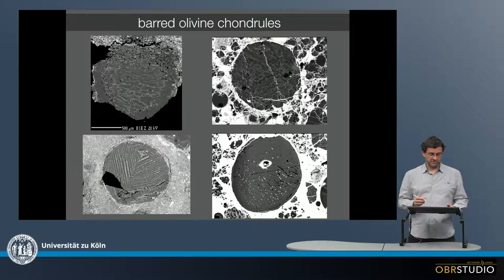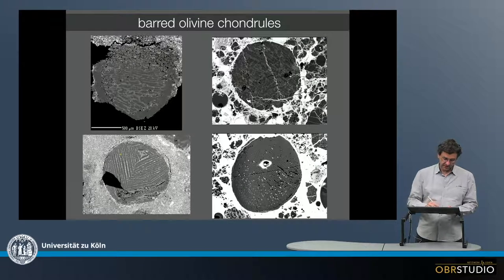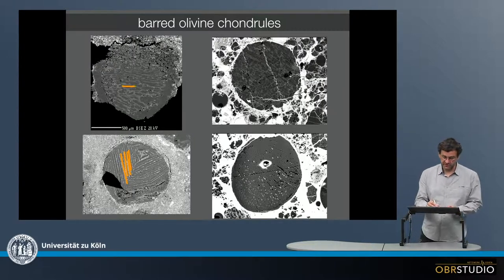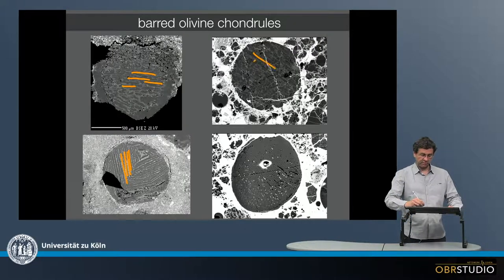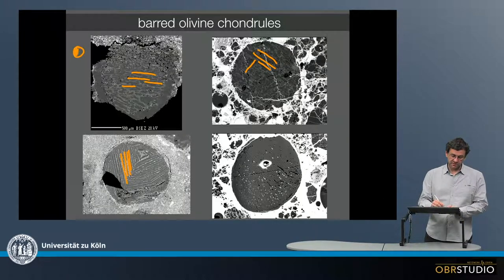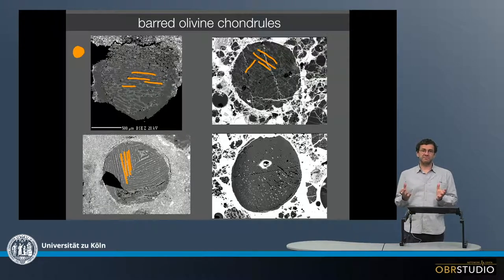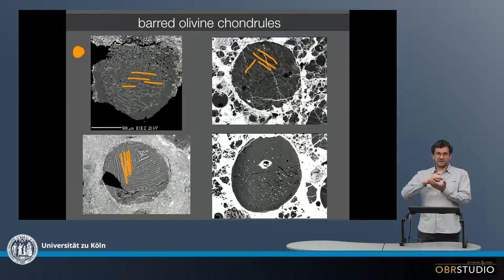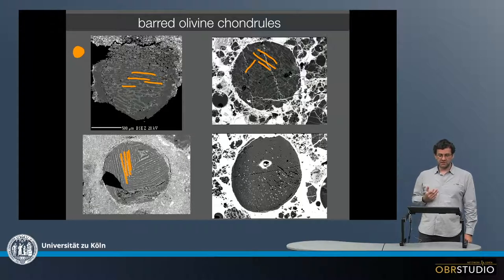As another type, there are barred olivine chondrules. There are bars — nicely seen down here — that are all olivine bars, with mesostasis in between. These barred olivine grains likely formed from a melt that was entirely free of any seed crystals. When this melt quenched — cooled very quickly and rapidly — the energy must go somewhere, and it goes to the surface of the skeletal olivine that forms. Skeletal olivine has a very high surface area. When this skeletal olivine is cut, it looks like bars, and this is how barred olivine chondrules formed.